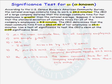According to the United States Census Bureau's American Community Survey, the national average commute time to work is 24.3 minutes. The CEO of a large company believes that the average commute time for her employees is greater than the national average.